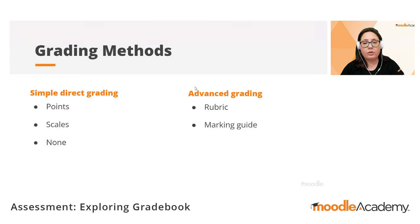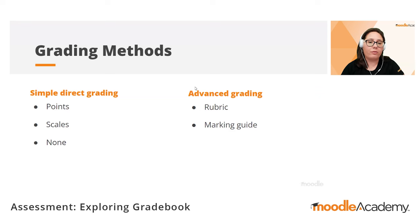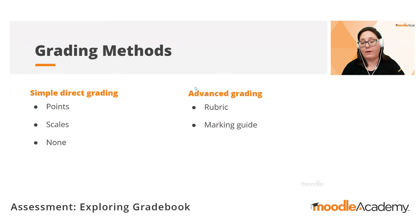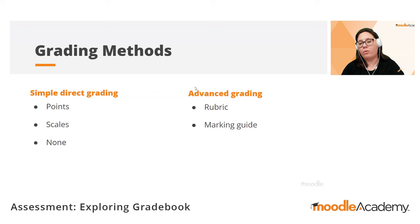In Moodle, there are also two grading methods: the simple direct grading method and the advanced grading. In the first, grading can be done through points like numerical scales, and also grading can be done with descriptive scales like pass-fail, incomplete, adequate, complete, or a five-star scale. Depending on the needs of our course, we might also set up an activity with no grading at all.